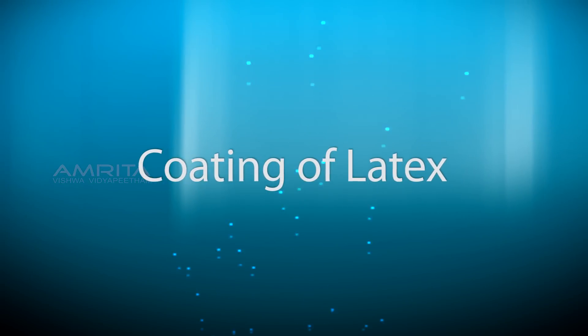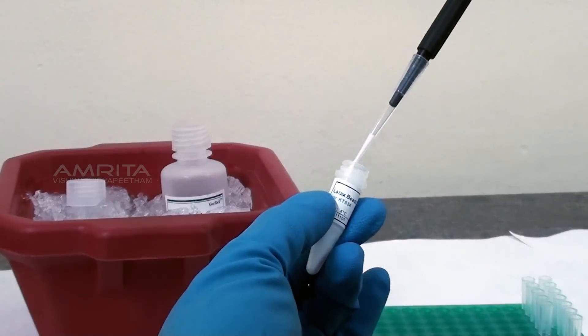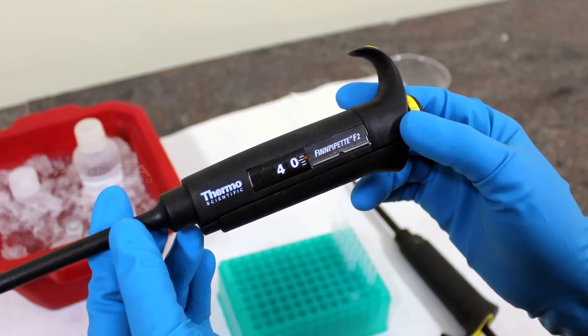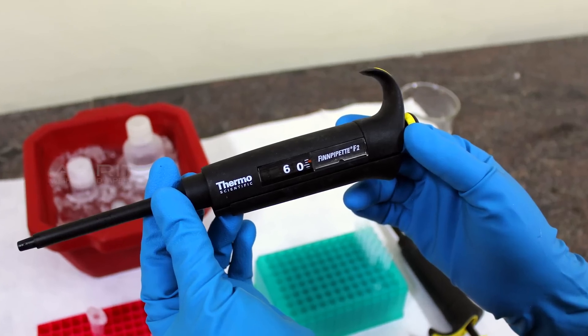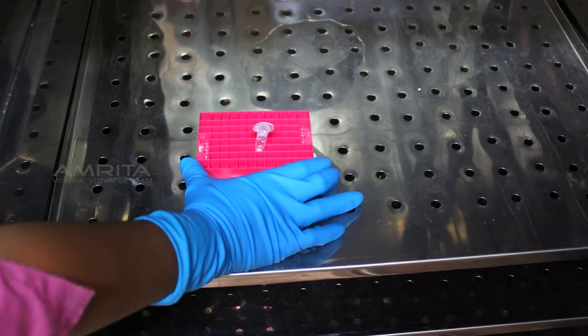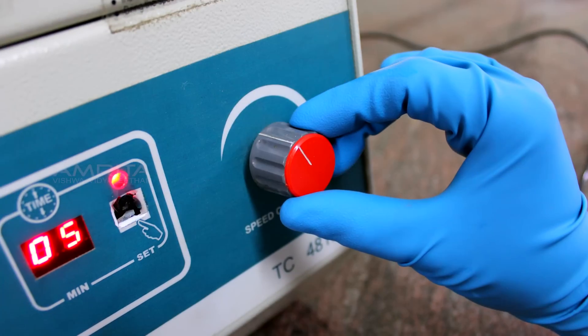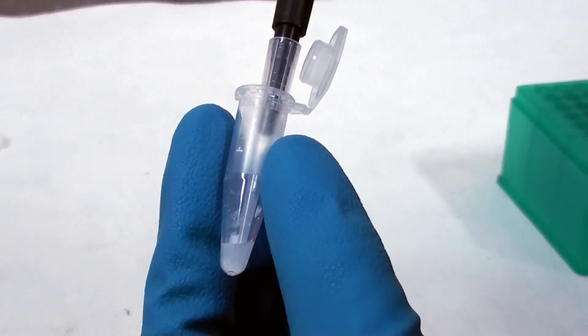Procedure: Coating of latex. To 20 microliters of latex beads taken in a 1.5 ml vial, add 40 microliters of glycine saline buffer. Add 60 microliters of antigen to the latex and incubate at 37 degrees Celsius for 2 hours. Spin down at 5000 rpm for 10 minutes and carefully aspirate the supernatant.